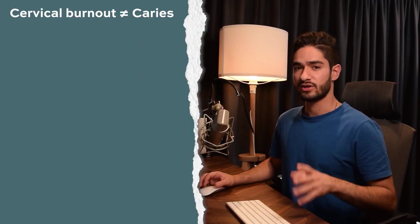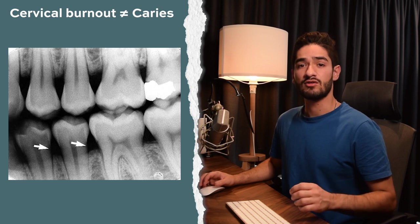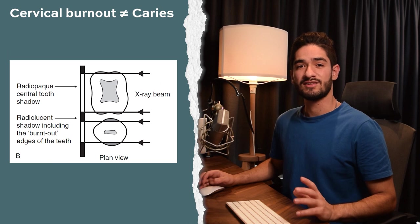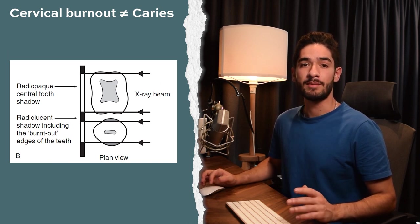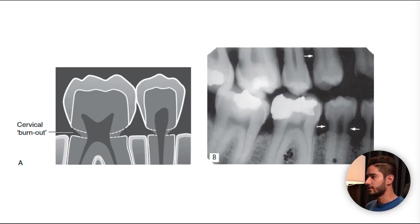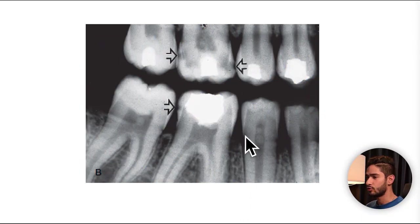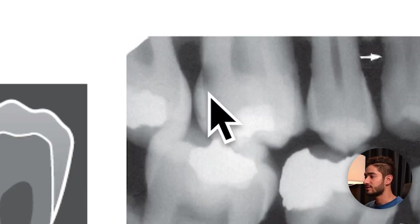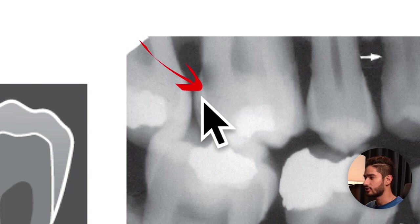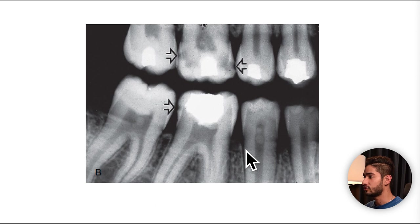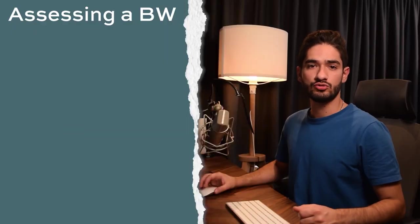Next, check the interproximal for radiolucent triangular shadows caused by caries, but watch out for mistaking cervical burnout for caries. Cervical burnout is a radiolucency often seen at the cervical margin of the teeth — it's an artifact caused by the anatomy: in the cervical region there's less tissue for the x-ray beam to pass through, so it appears radiolucent. To distinguish them: cervical burnout is always at the neck of the tooth, demarcated between the enamel cap and the alveolar bone, whereas caries goes above and under the enamel cap. Cervical burnout also has a triangular shape and gradually becomes less radiolucent. Always look back in the mouth to confirm if it's caries or not.